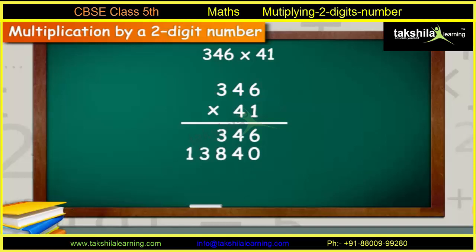Place this number as shown below 346. Now, add all the numbers together. The final sum comes out to be 14,186. This is your answer.